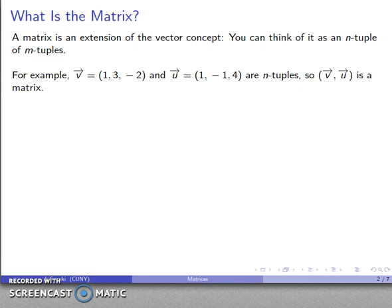So for example, vectors are tuples. So here is a vector and both of these are three-tuples. So I have two vectors and I can take the two-tuple of vectors v, u and that's going to give us a matrix.